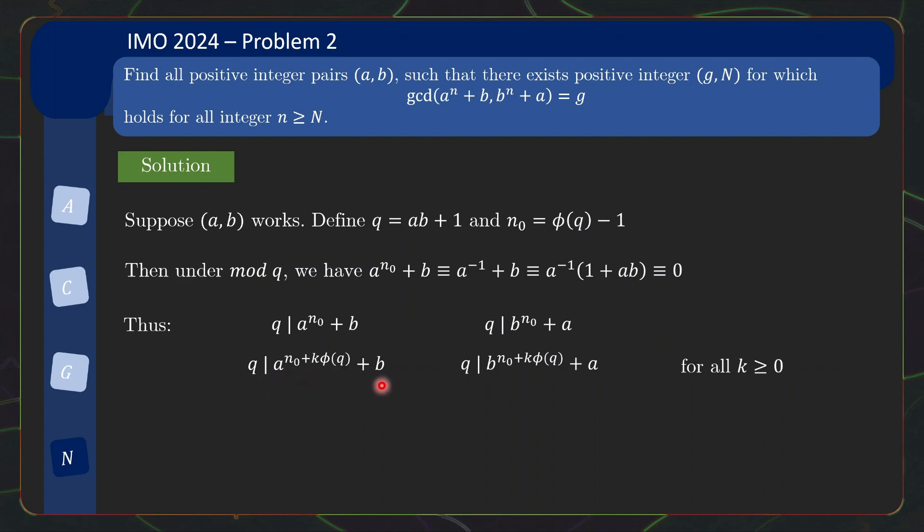So q also divides this, q divides this, for all k ≥ 0. So this means that because your gcd is eventually constant, remember ab here we assume it's a valid solution, since the gcd is eventually constant, then q must divide this eventual gcd.